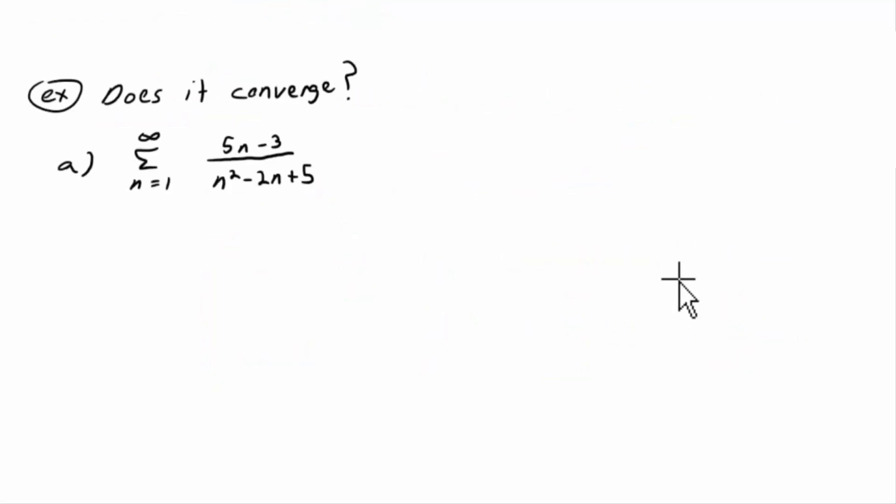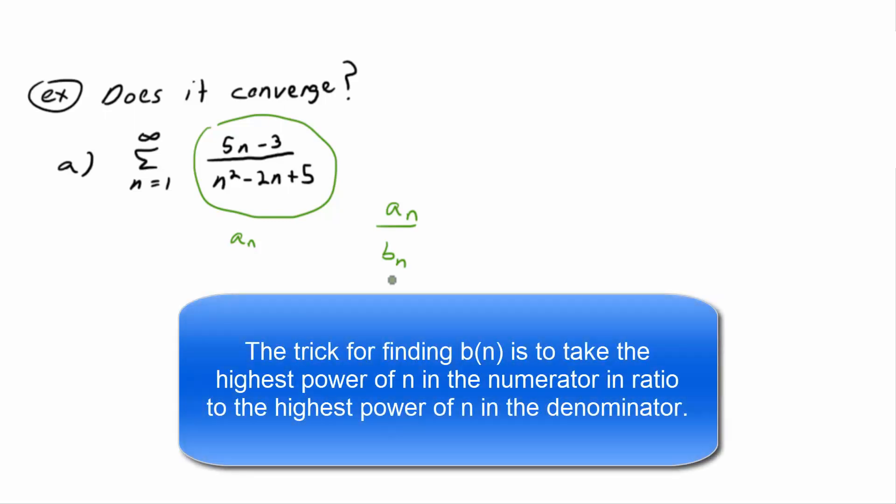Does it converge? The sum n equals 1 to infinity, 5n minus 3, divided by n squared minus 2n plus 5. Okay, the trick, now, in the statement of the theorem, I'm like thinking of this guy as my a_n, and remember, we want to look at a_n over b_n, right? So that you have to come up with the simpler function b_n, or perhaps it's simpler, right? You have to come up with the simpler formula for b_n. So the trick for finding b_n,